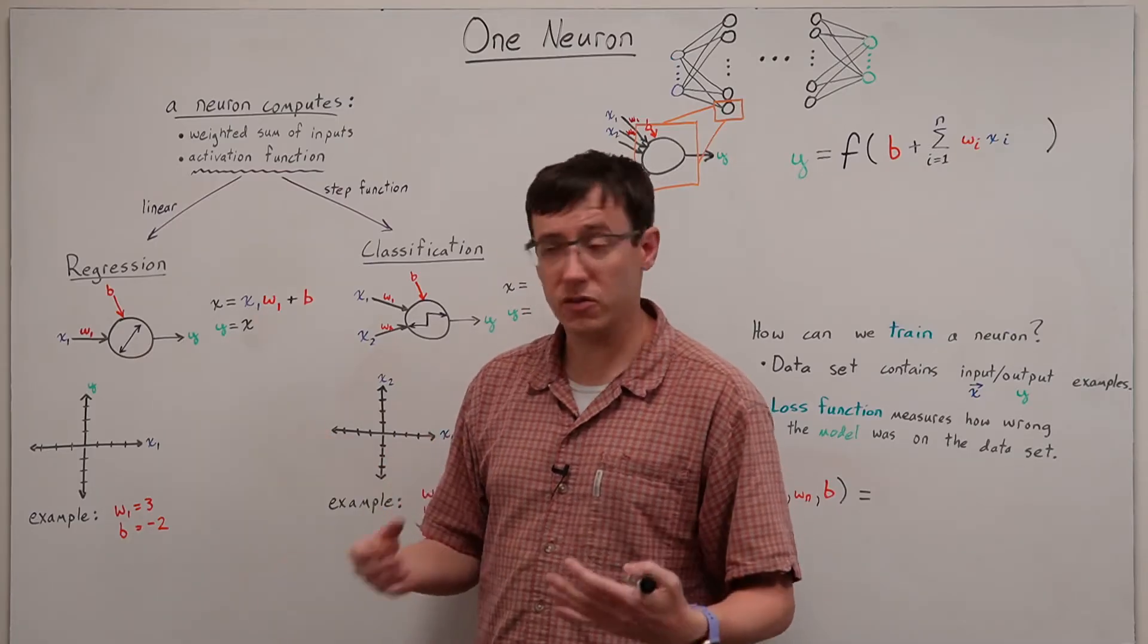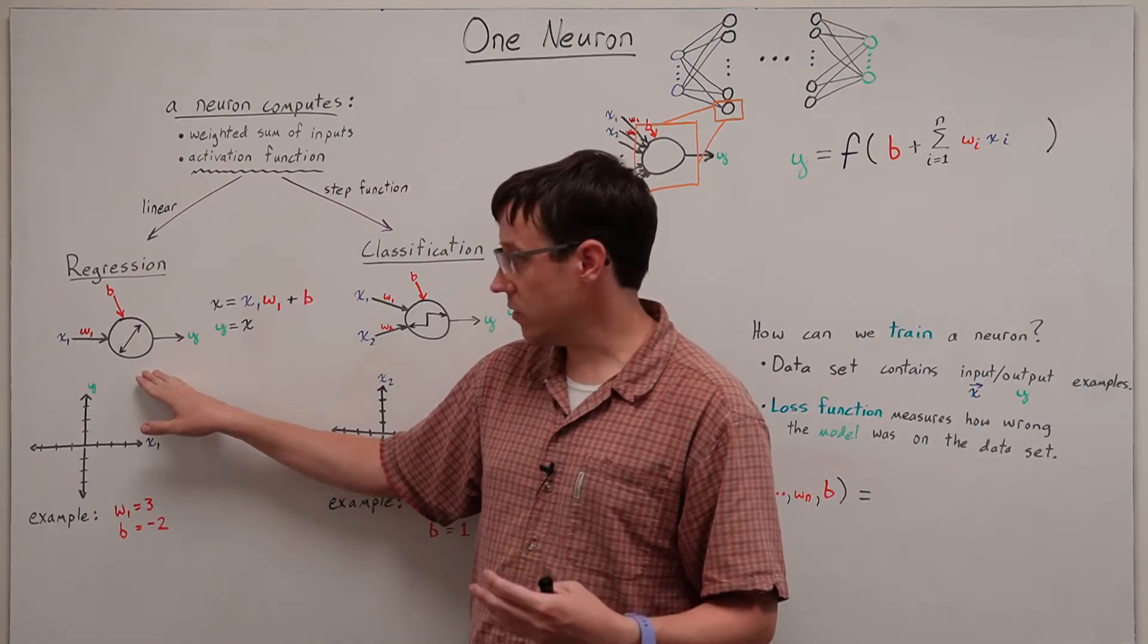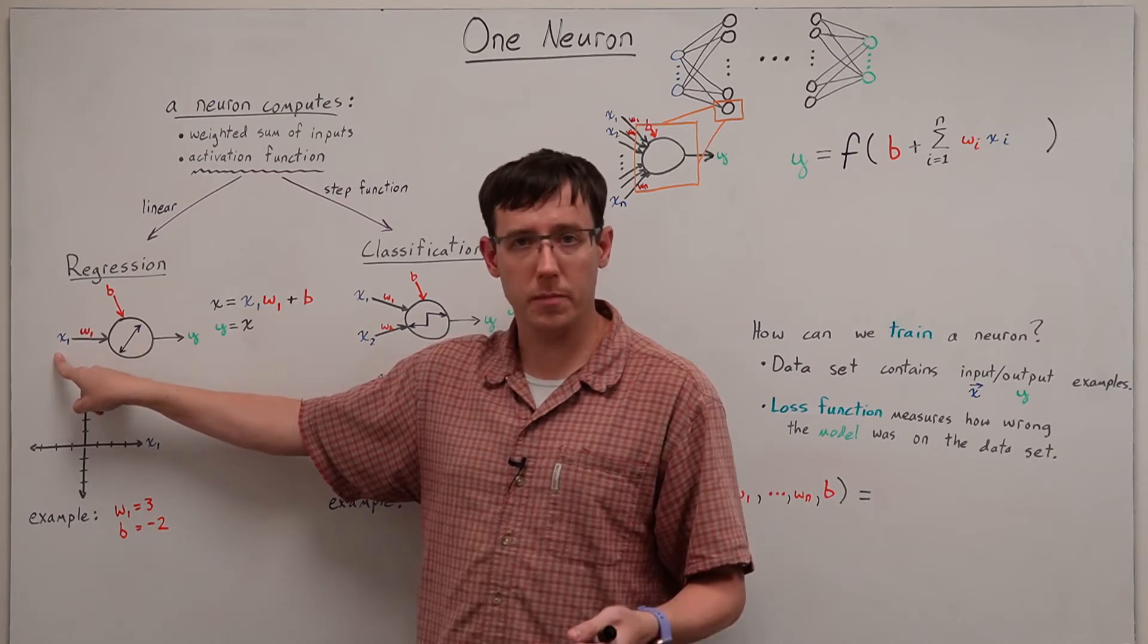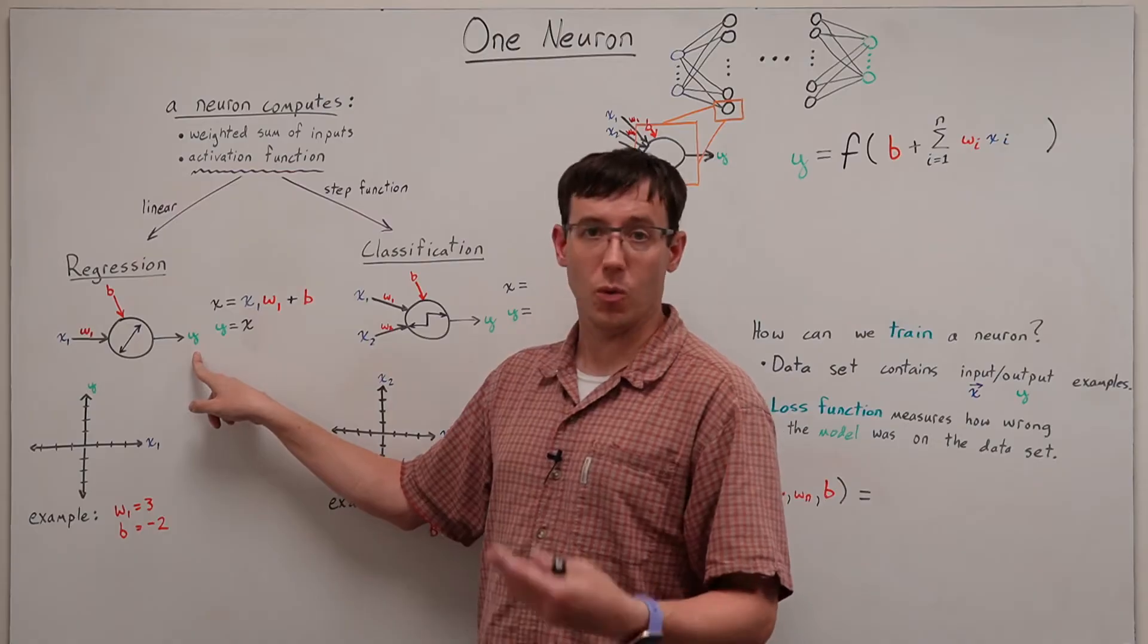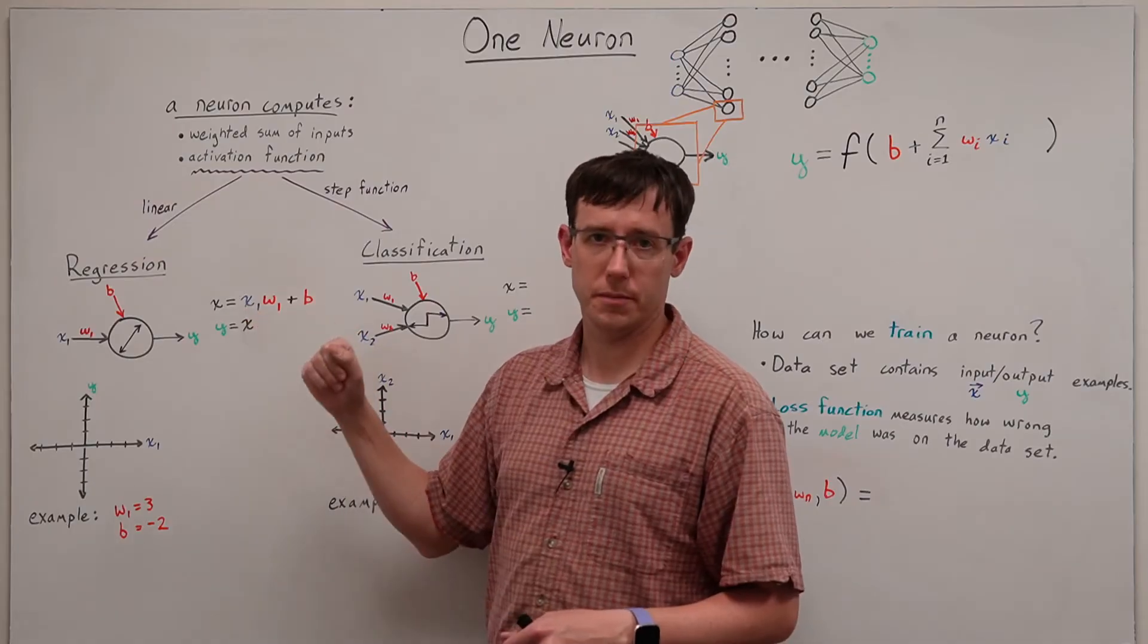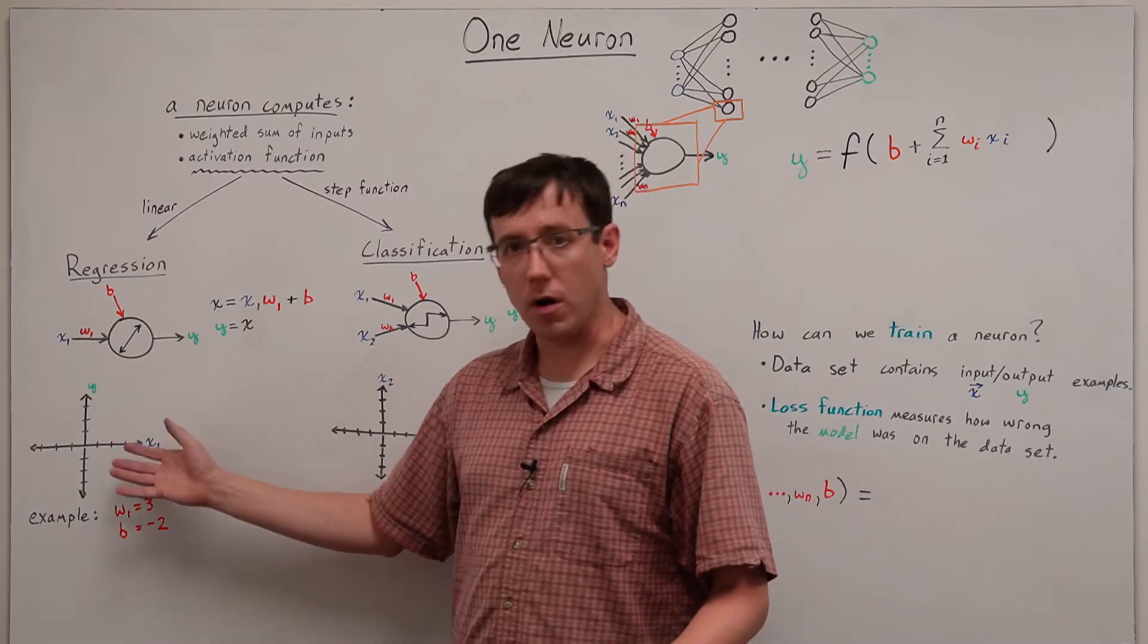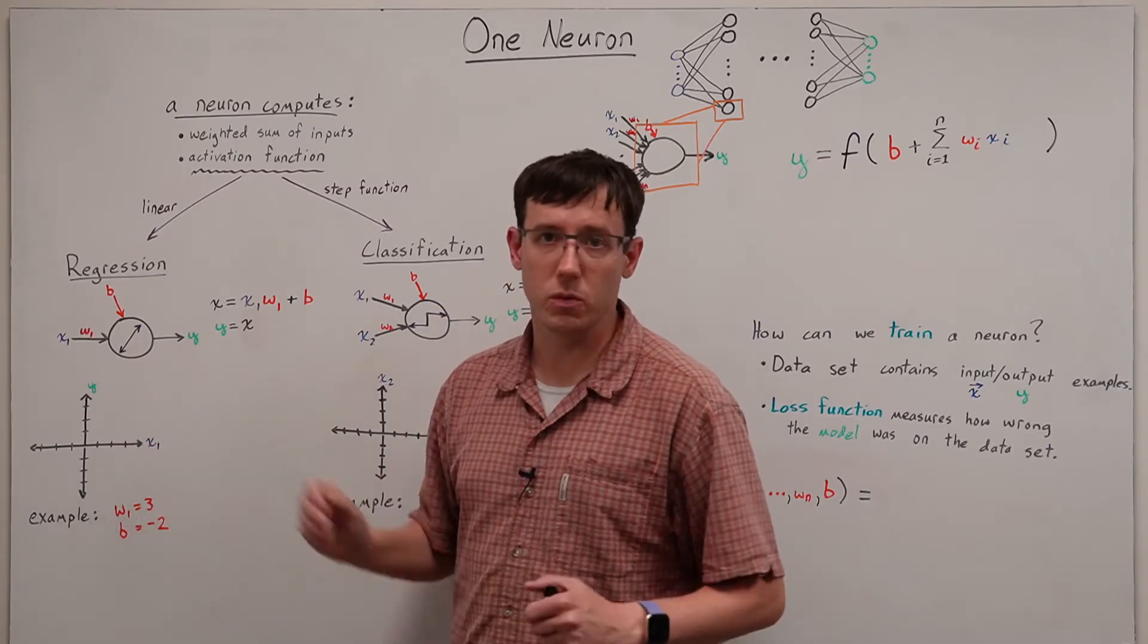So if we ask what type of things can this neuron compute, any function that it represents will have a one-dimensional input x1, and it will always produce a one-dimensional output y, and the mapping from input to output will be a linear function. So if we pick particular values for the weight and the bias, we can then draw the specific linear function that the neuron computes.